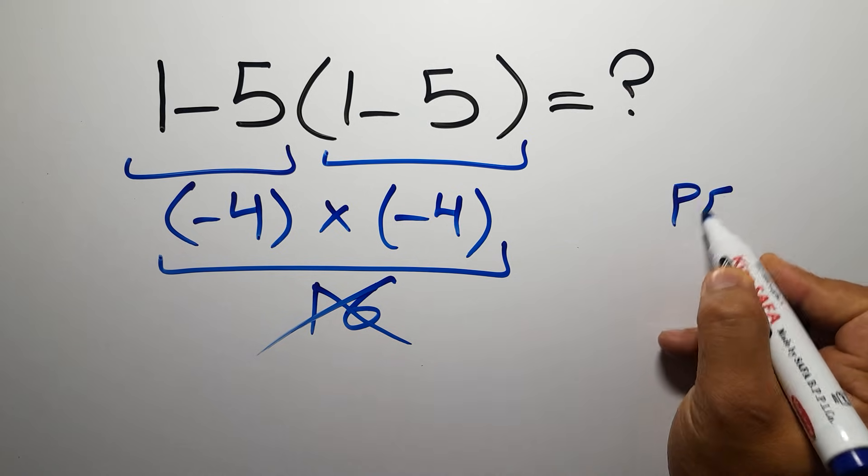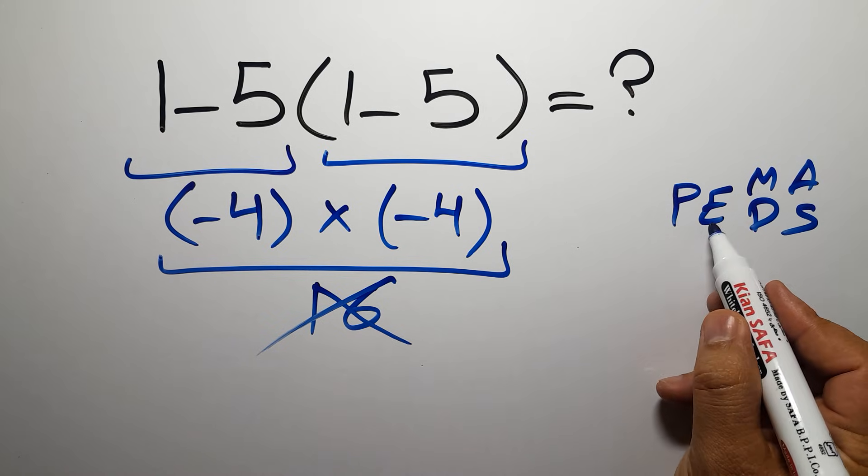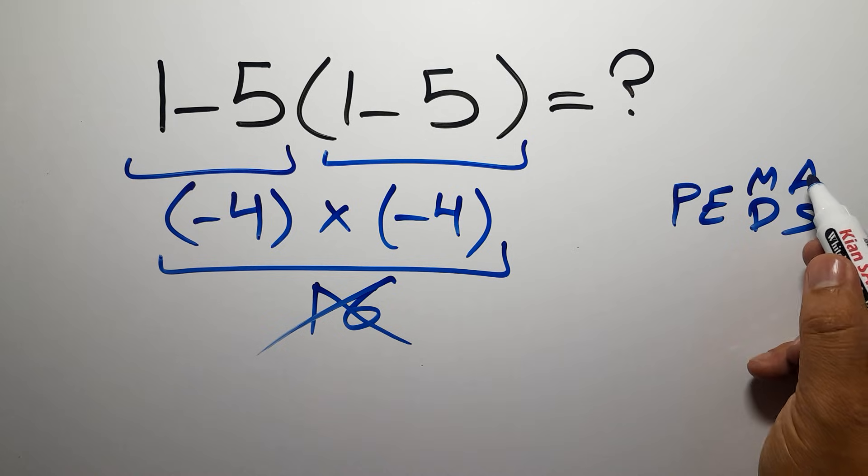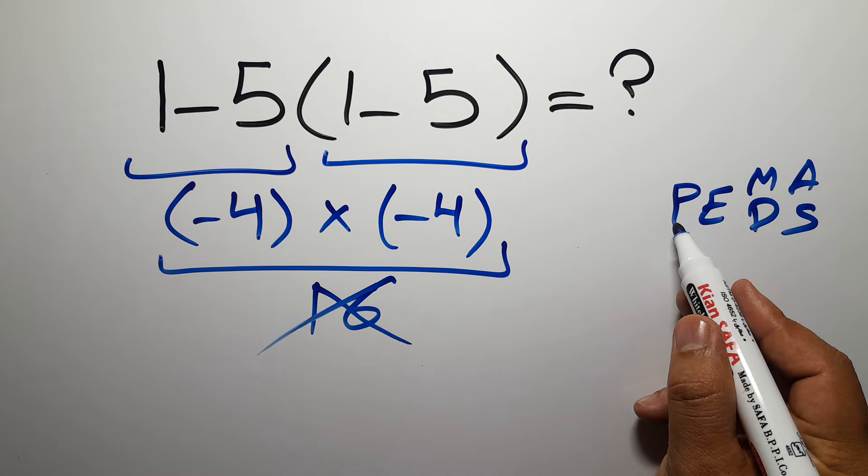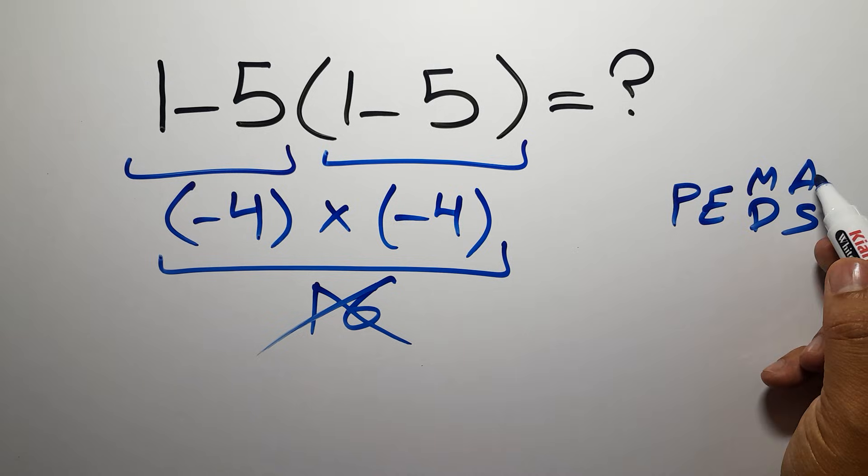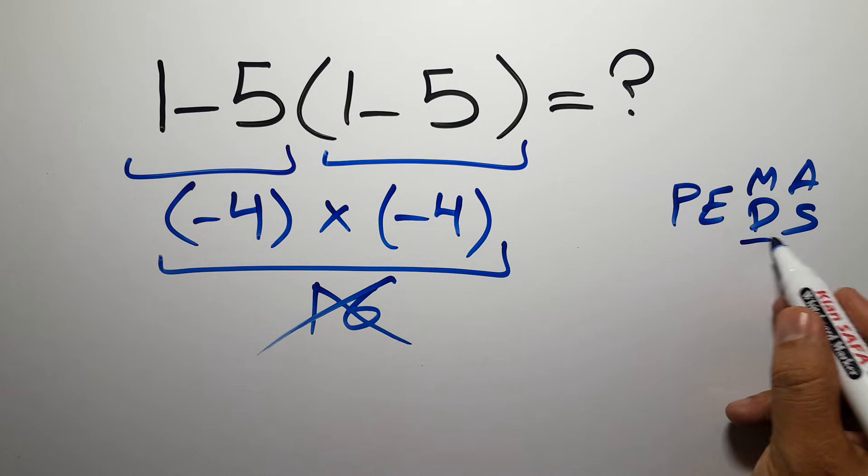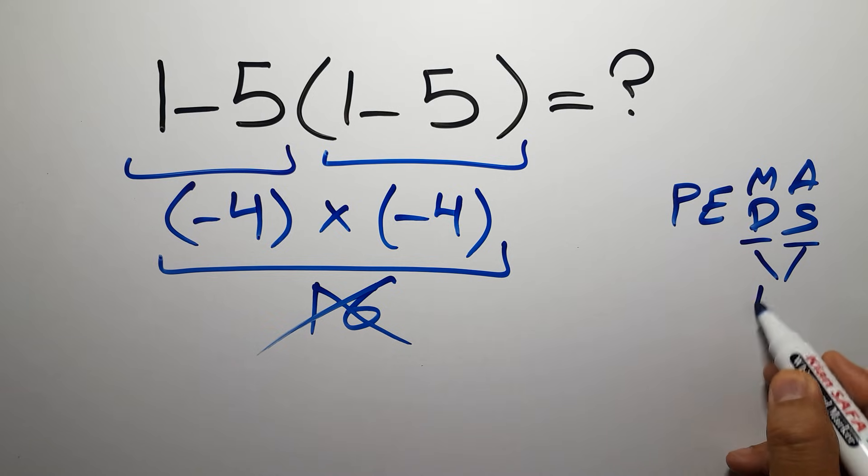which is PEMDAS: parentheses, exponents, multiplication, division, addition, and subtraction. First we do parentheses, then exponents, then multiplication or division, and finally addition or subtraction. Remember that multiplication and division have equal priority and we work from left to right. The same applies to addition and subtraction.